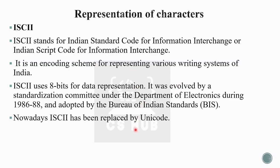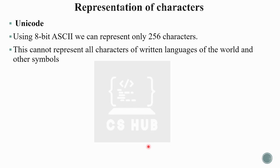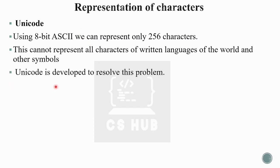Nowadays ISCII has been replaced by Unicode. Using 8-bit ASCII, we can represent only 256 characters — this cannot represent all characters of written languages of the world. For English this is enough, but for all the written languages of the world and other symbols, even 8-bit ASCII cannot represent all characters. For that, Unicode was developed.